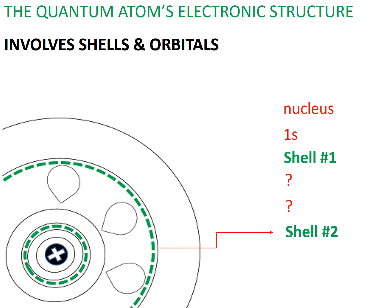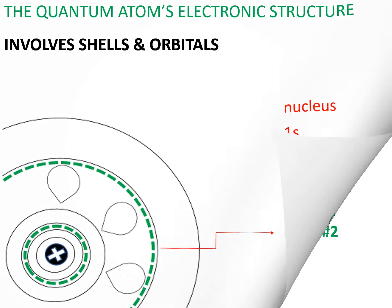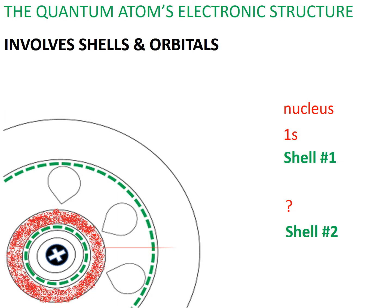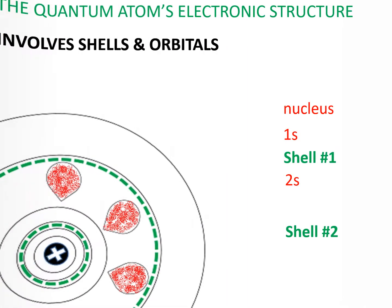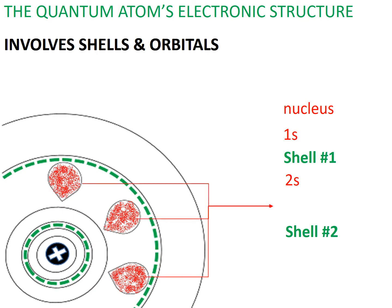Within this second shell, you will find two types of orbitals. A 2s orbital, a region just outside 1s and can occupy a maximum of 2 electrons. And a 2p orbital, a region just outside 2s that can occupy a maximum of 6 electrons.